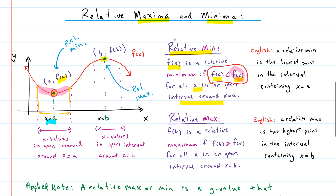That's what this part says: f(a) is less than f(x). That means you take any x in this whole region — the open interval surrounding x equals a — plug it into the function, and you'll get a bigger y value than you would if you plugged in a into the function, because that gives you the lowest point in the surrounding area. The open interval, shown with parentheses, just means we don't include the endpoints. So if x equals a has the smallest y value of all the x values you tried, then there is a minimum at x equals a.